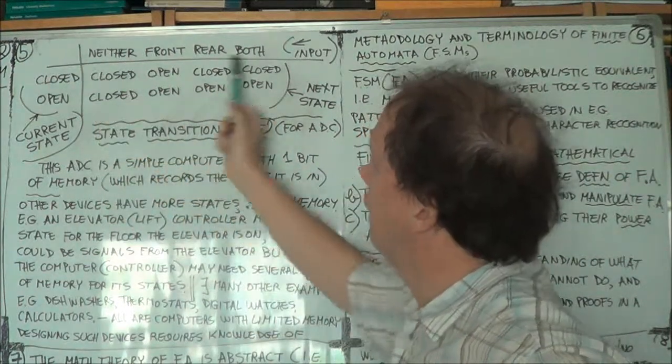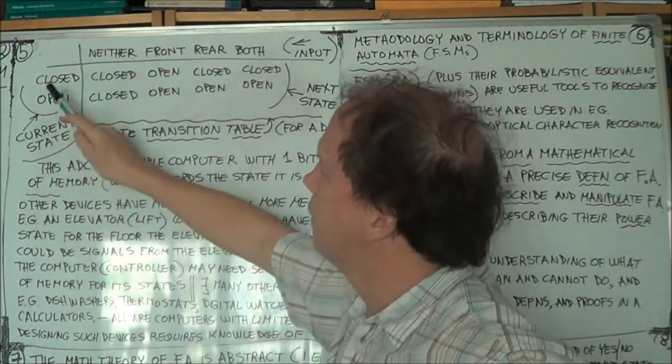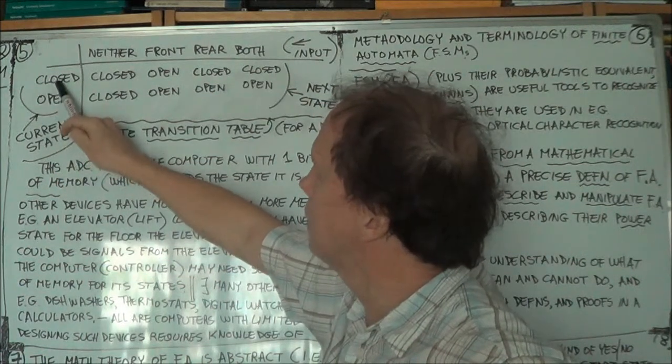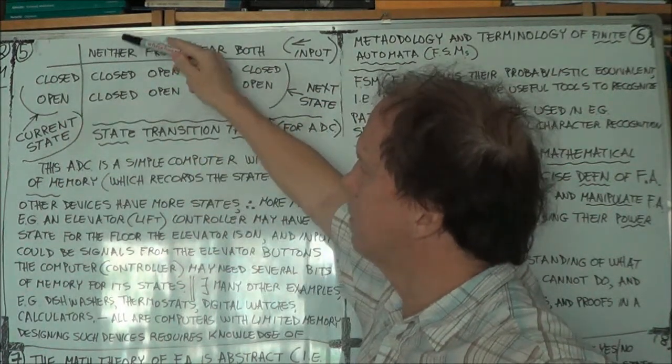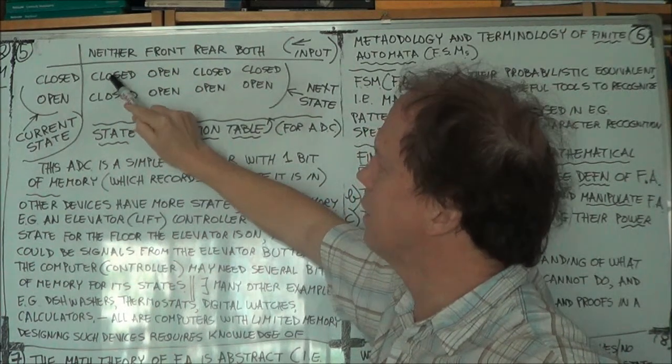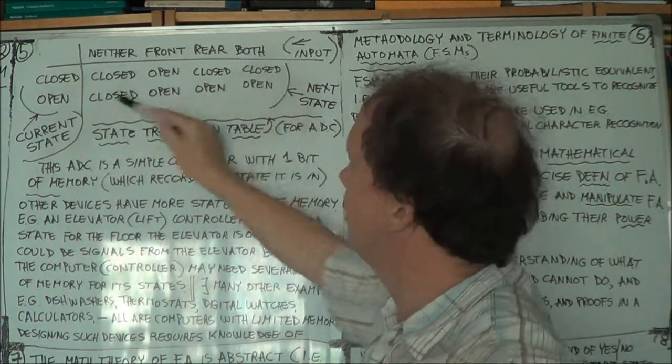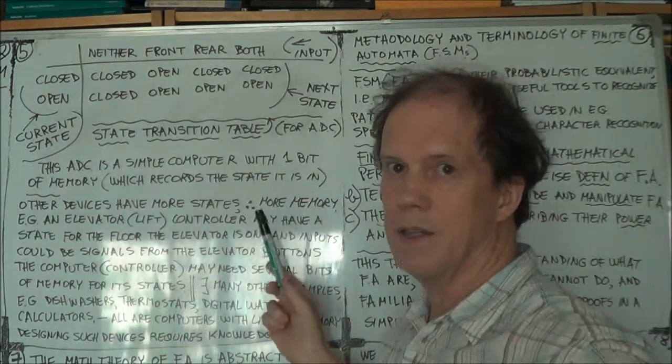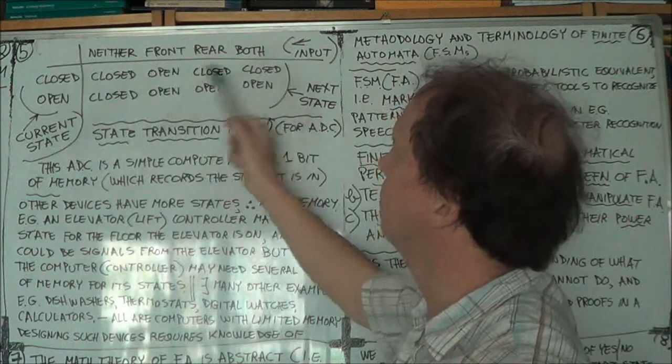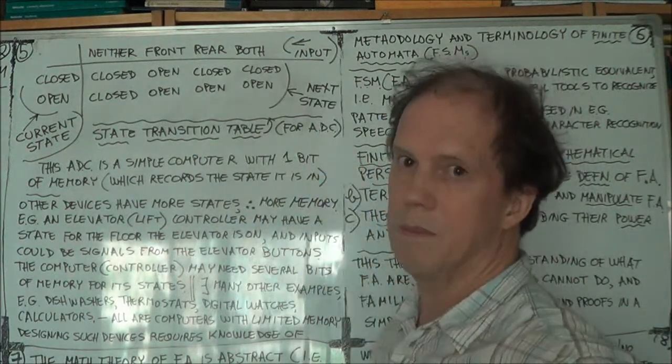So how do you interpret this? Well, in the following way. If the current state is closed and the input signal coming in is neither, then the next state is closed. So these eight here, these eight state labels, they are the next state, the eight possible next states.